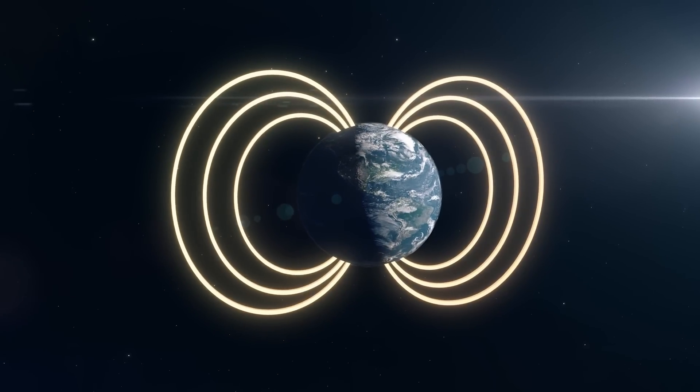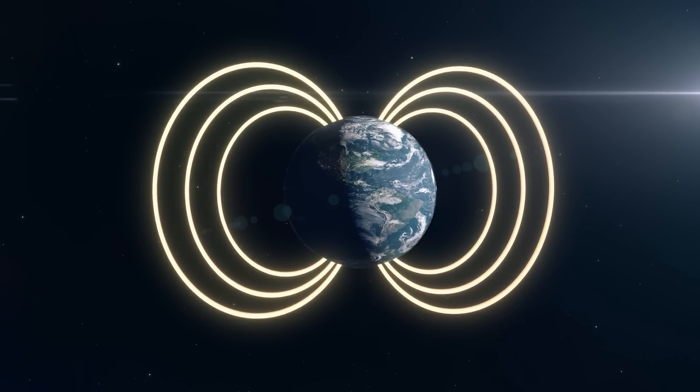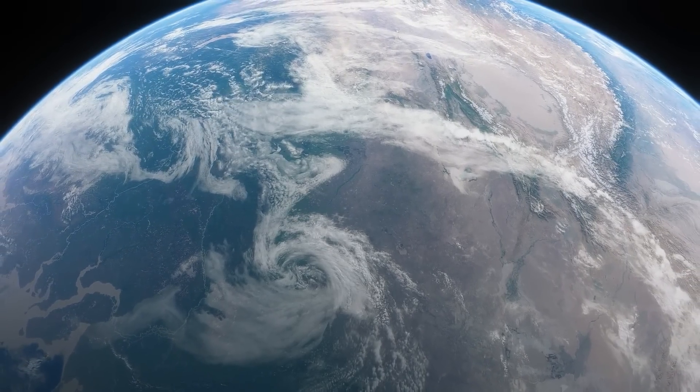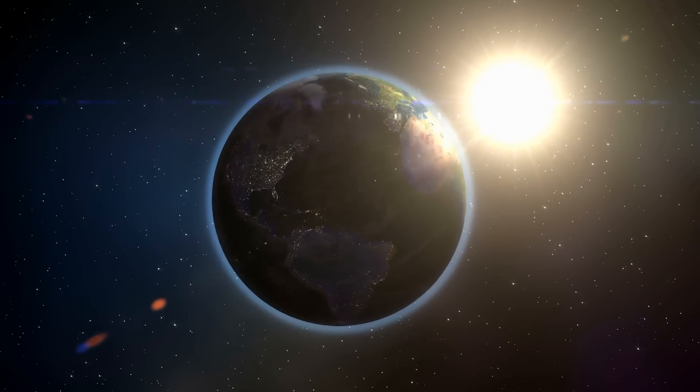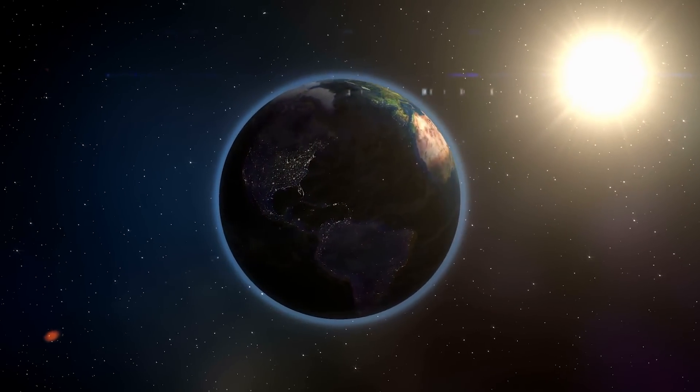The Earth's magnetic field is key to life as we know it. Without it, the solar wind would batter the surface of our planet, breaking down the molecules in our atmosphere and making it impossible for us to survive. Thanks to our magnetic field, we are shielded from the worst of the Sun's energy.